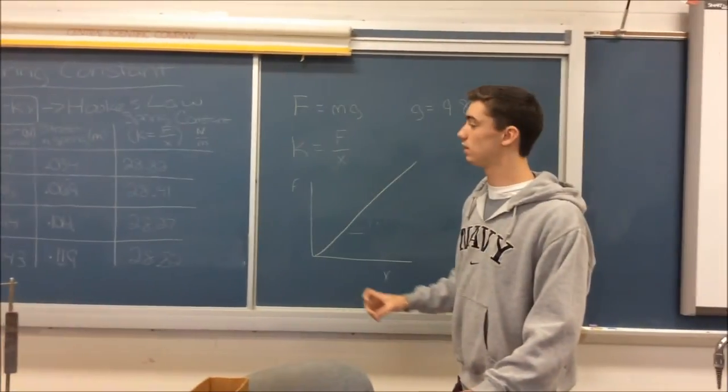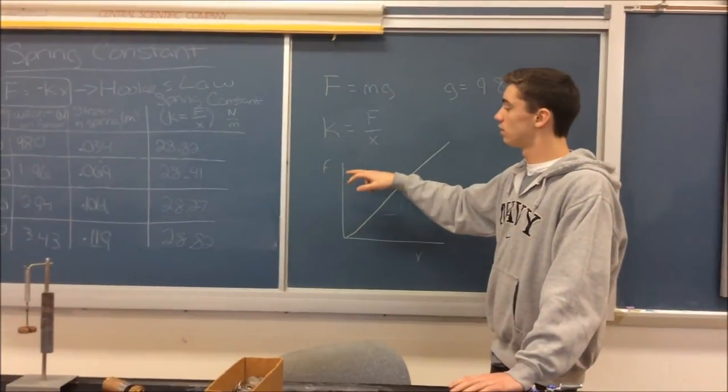If we were to graph these results, F versus x, your slope would be your spring constant. So your k is your slope.